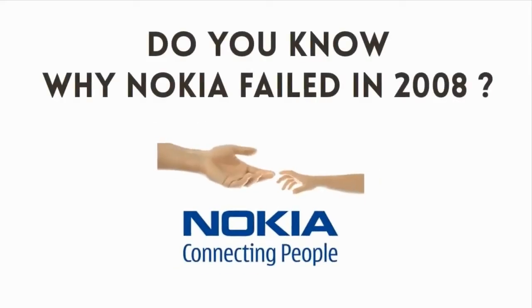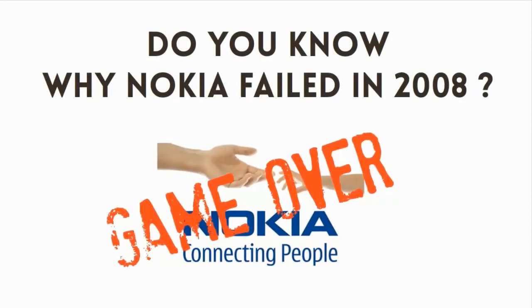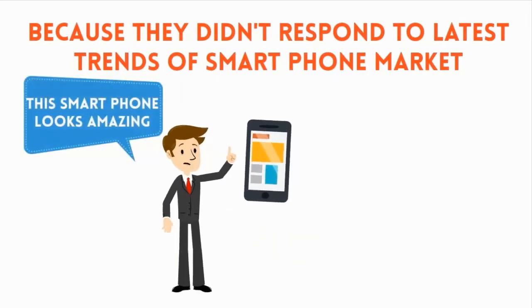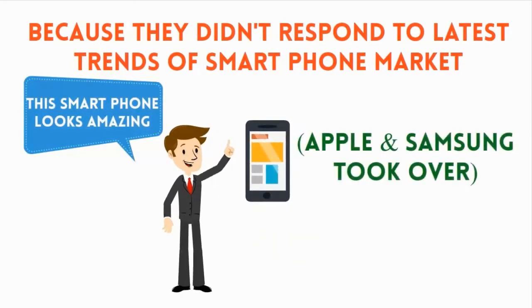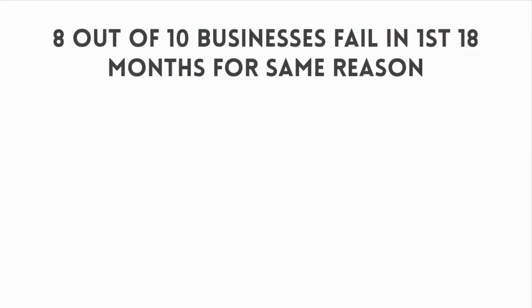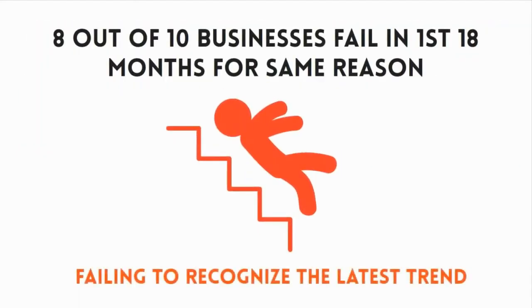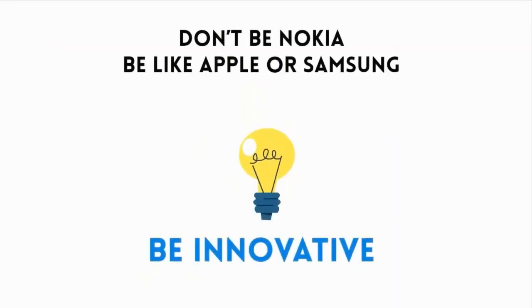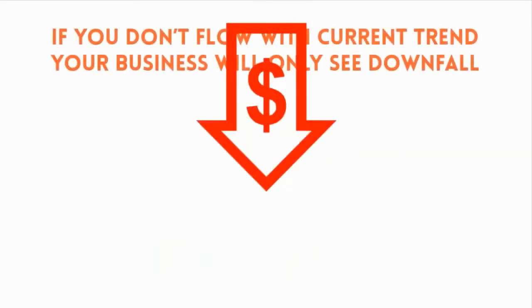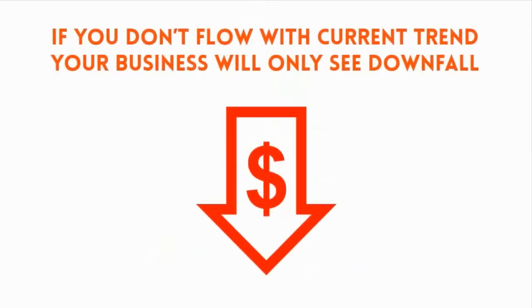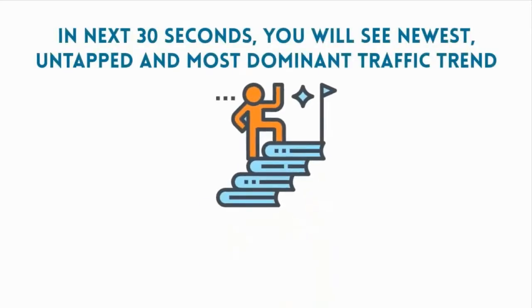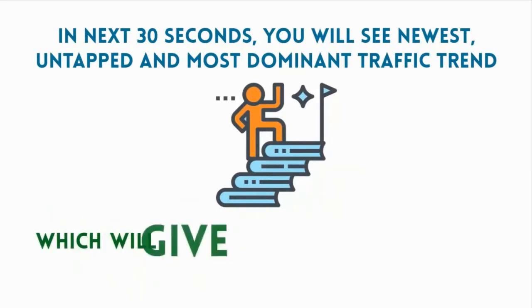Do you know why big giant number one cellular company Nokia failed in 2008? Because they didn't respond on time to the latest trends of the smartphone market and lost all of their traffic to smart companies like Apple and Samsung. Even today, 8 out of 10 businesses fail in the first 18 months for the same reason. The point is: don't be Nokia. Be like Apple or Samsung. If you don't flow with the current trend, your business will only see downfall. In the next 30 seconds, you will see the newest, untapped, and most dominant traffic trend which will give you exponential growth.